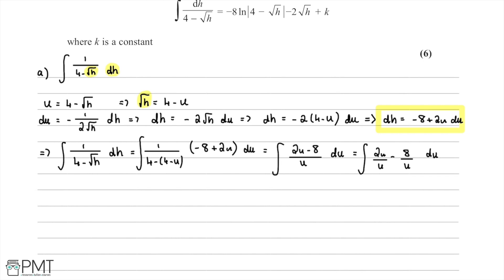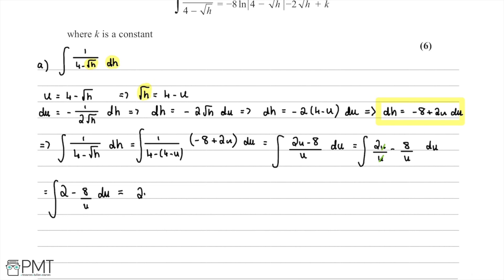Now we integrate: 2 integrates to 2u, and 8/u integrates to 8 ln|u|. So the result is 2u - 8 ln|u| + c.